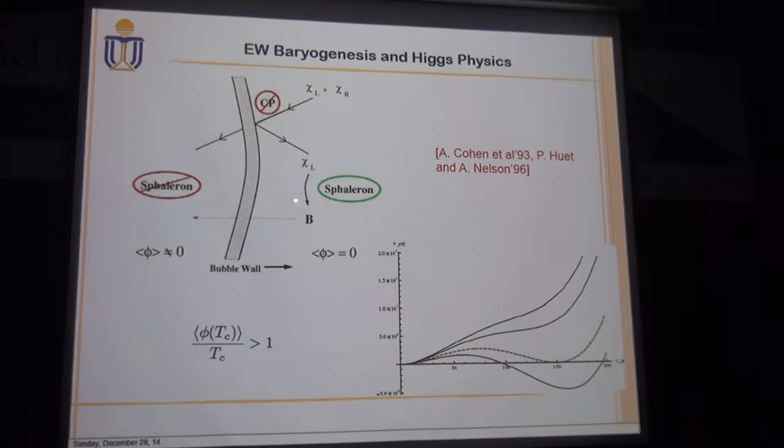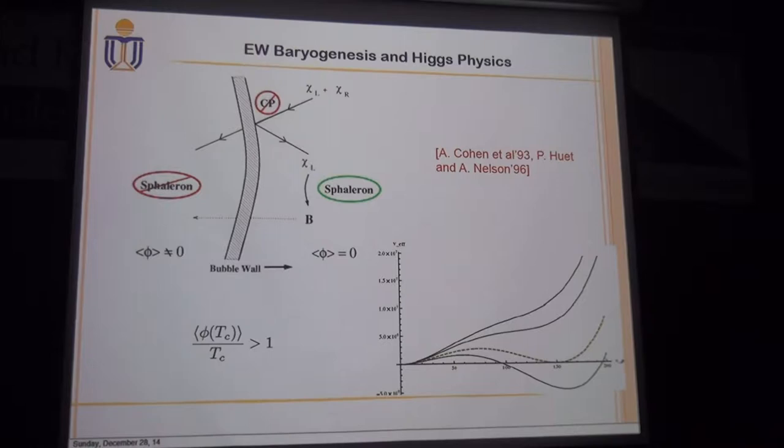However, a strongly first-order electroweak phase transition requires a profile for the Higgs potential in the early universe with a bump. This feature, in turn, has strong constraints on the tri-Higgs couplings at zero temperature.